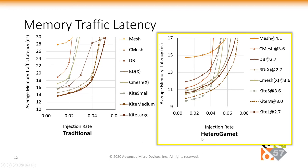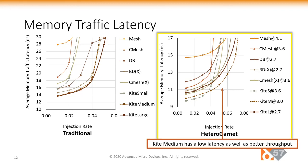However, when we use a more accurate simulation infrastructure like HeteroGarnet, we see that topologies with shorter links take advantage of higher operating frequency and thus deliver better latency and improved throughput. In fact, a misaligned CMesh outperforms Butter Donut in terms of latency at low injection rates by about 4%. This shows that while longer links can reduce hop count, the trade-off of operating at a lower frequency can diminish some latency advantages. Kite Medium uses shorter links compared to Butter Donut and Kite Large and still outperforms them by offering lower latency and an improved saturating load limit.